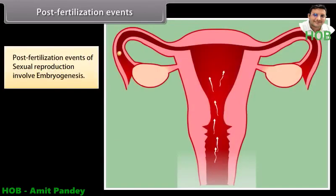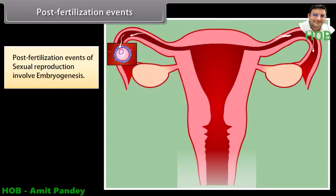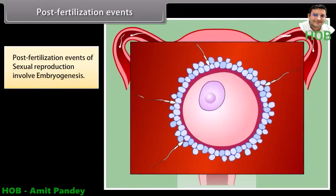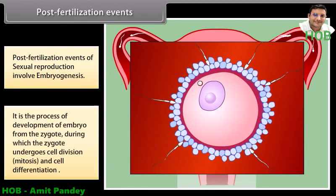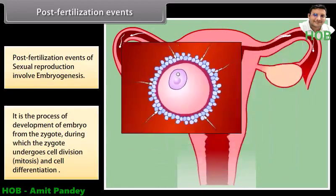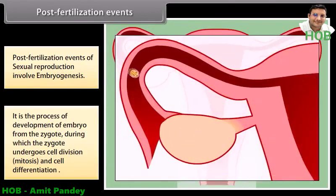Post-fertilization events of sexual reproduction involve embryogenesis. It is the process of development of an embryo from the zygote, during which the zygote undergoes cell division (mitosis) and cell differentiation, as shown in the diagram.